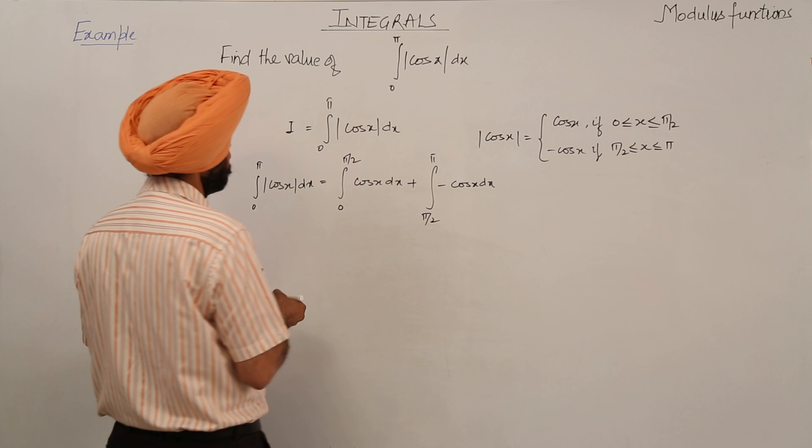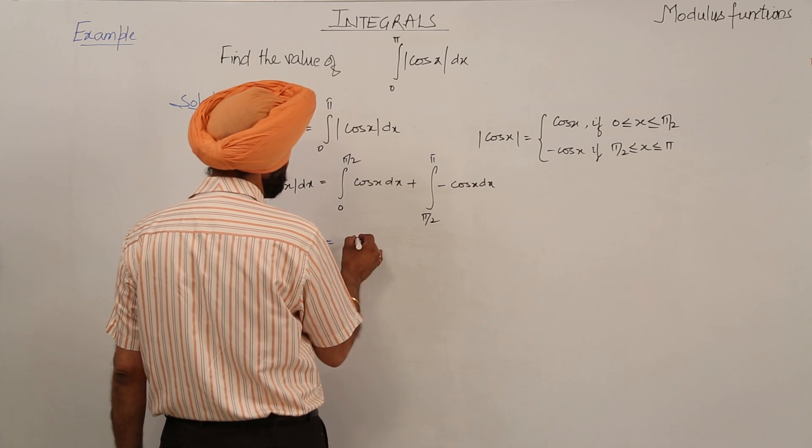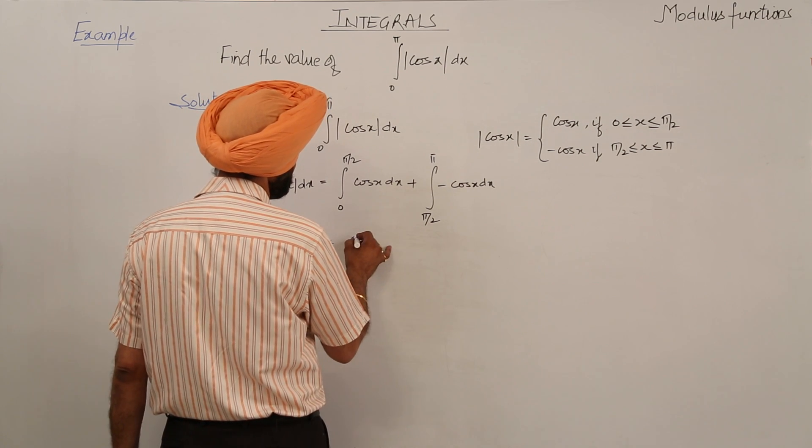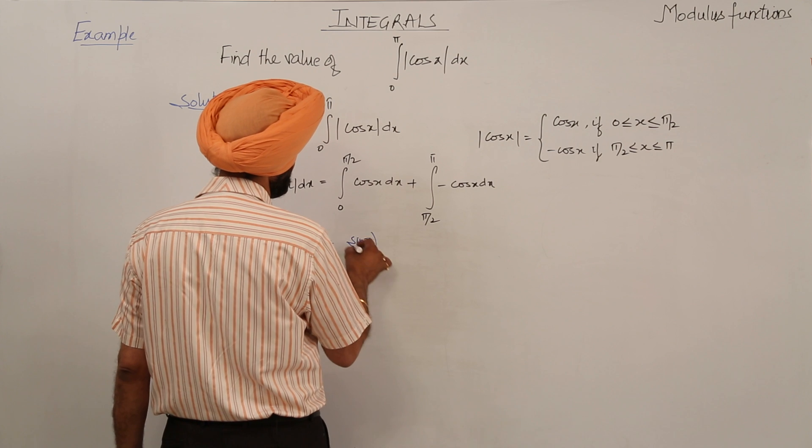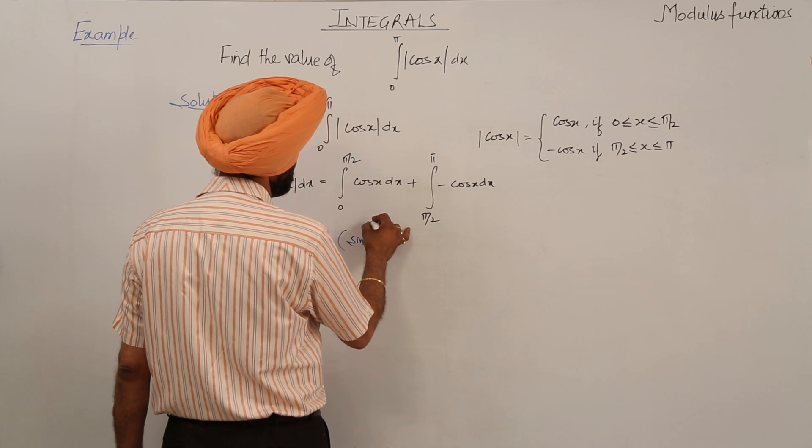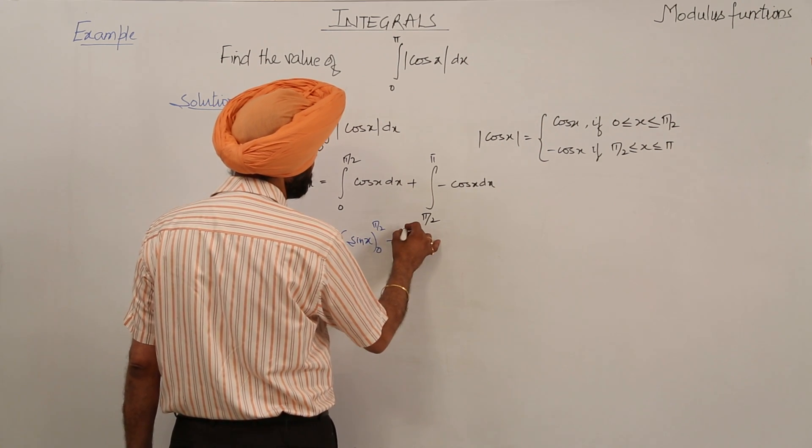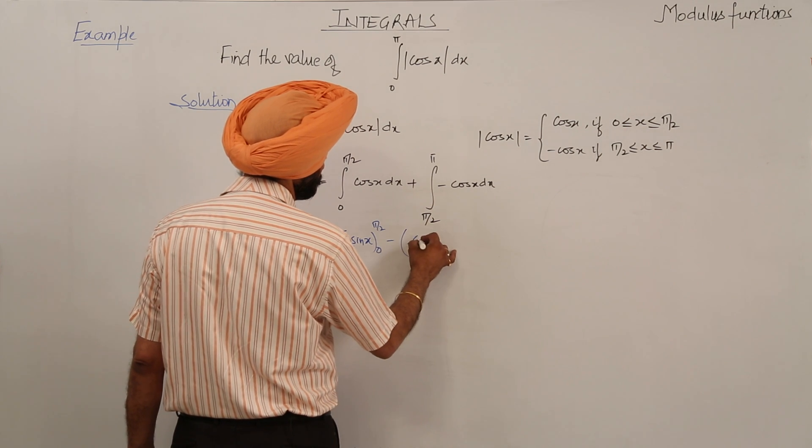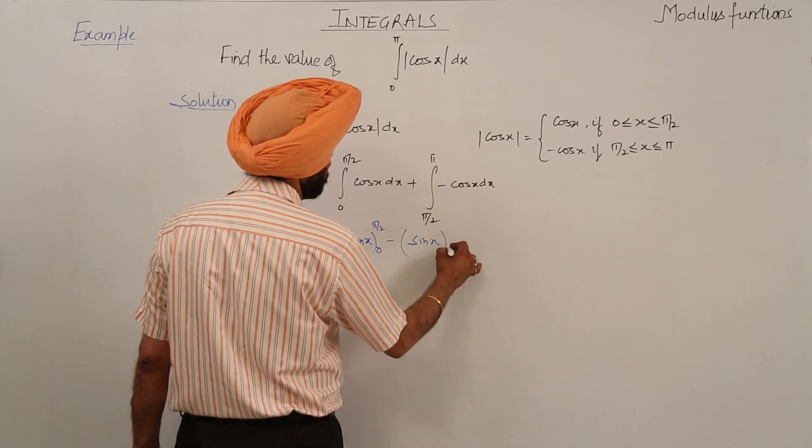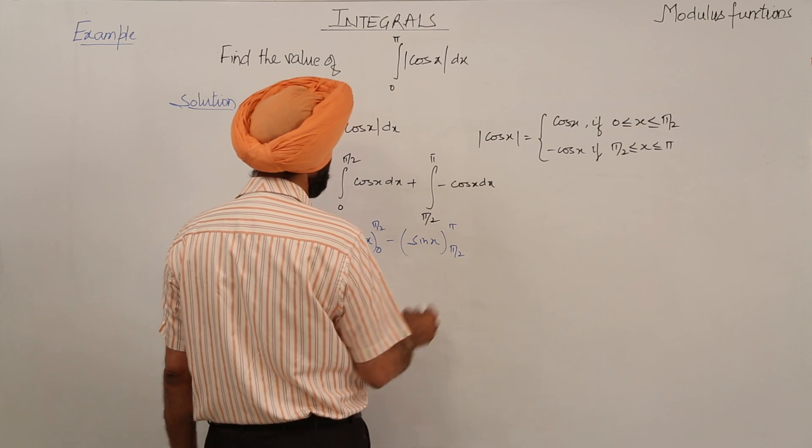So now what does it become? The integration of cosx is sinx, so we have sinx evaluated from 0 to pi by 2 minus sinx evaluated from pi by 2 to pi.